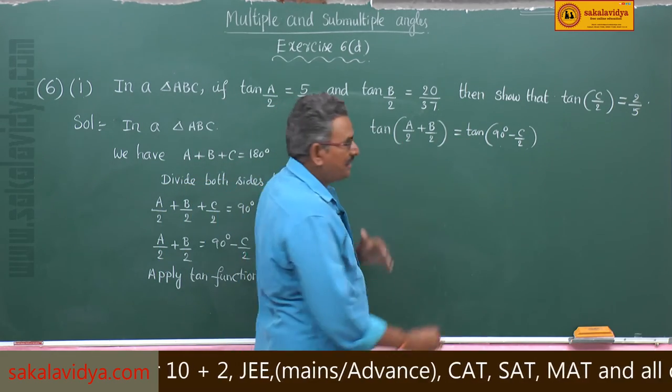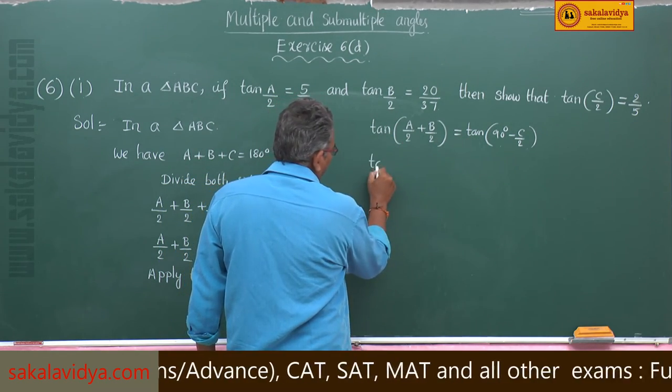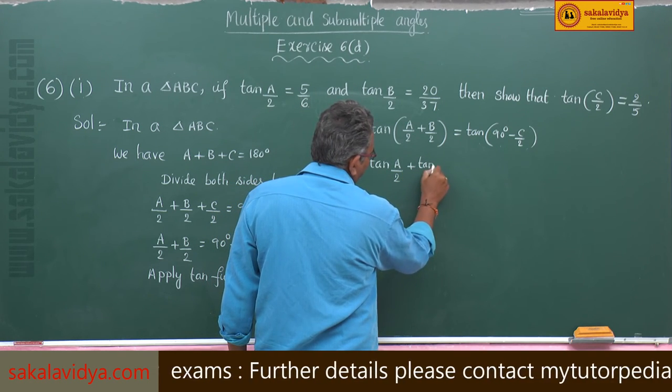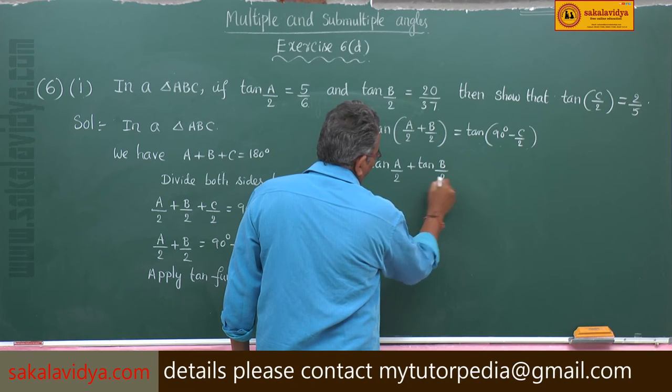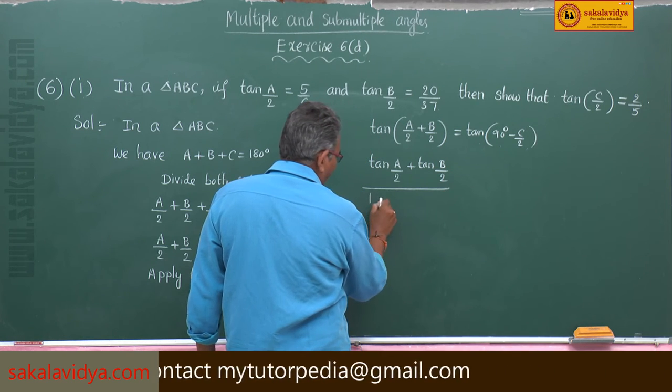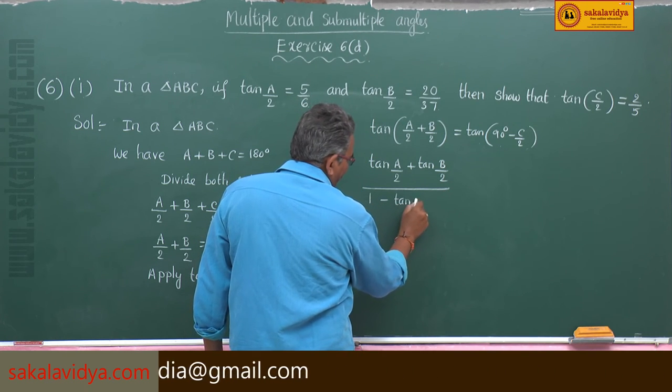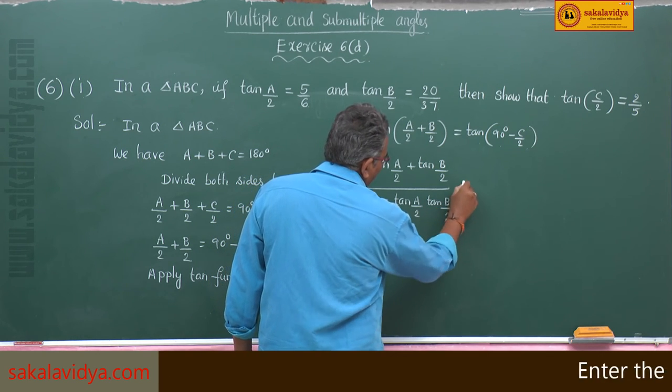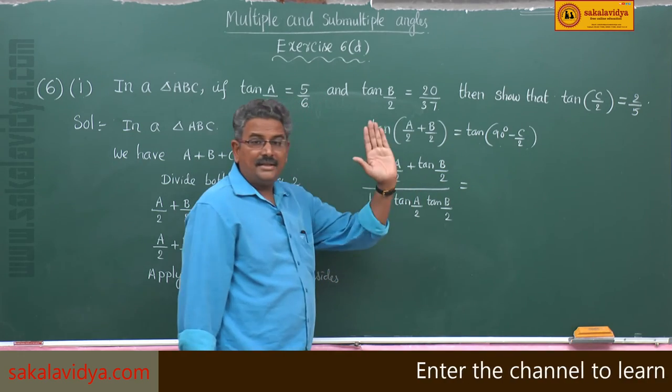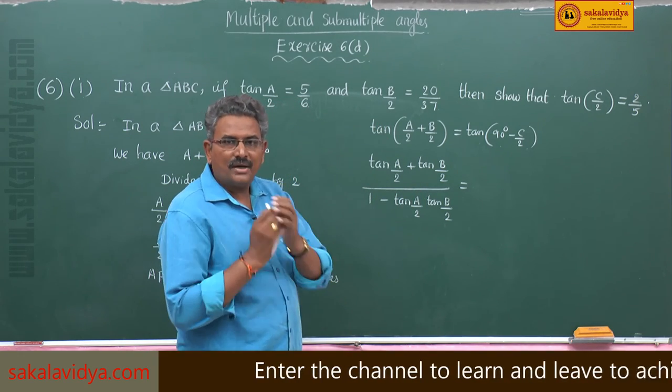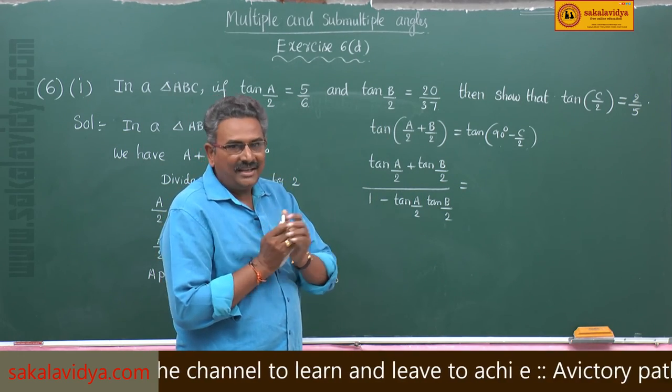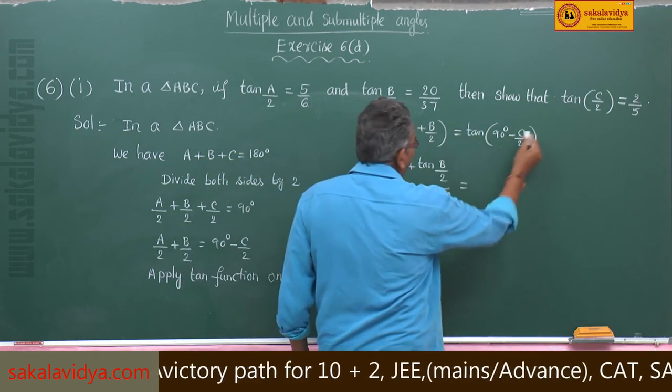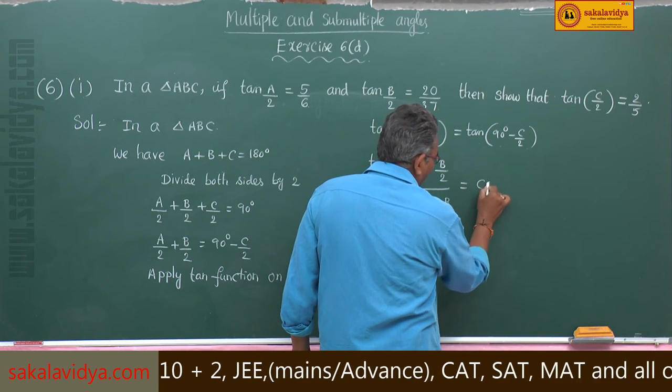This tan of A by 2 plus B by 2 can be written as tan of A by 2 plus tan of B by 2 divided by 1 minus tan A by 2 tan B by 2 equals to tan 90 degrees minus C by 2, which is cot C by 2.